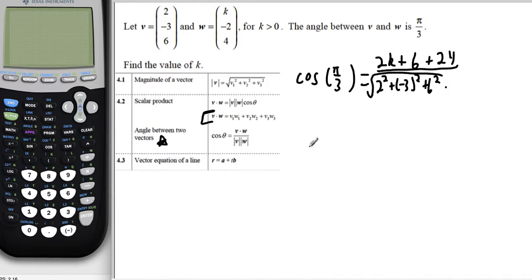And then I have to do the same thing for w. I need to take k squared, plus negative 2 squared, plus 4 squared, and the square root of all that. So I'll have k squared, plus negative 2 squared, plus 4 squared, and the square root of all that.